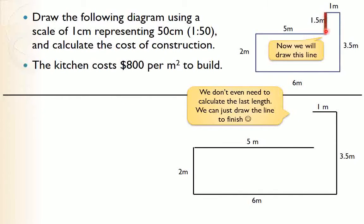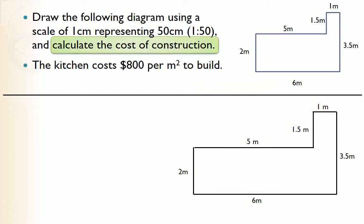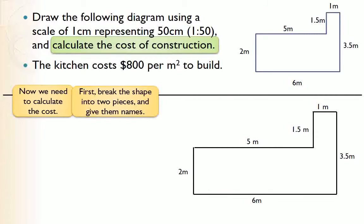For the last side, we don't actually need to calculate because it's just joining the two endpoints — there's only one length that could possibly fit. Finish it off and remember to label it with the real-world measurement. There's one part of the question we haven't done yet: we need to calculate how much it will cost. We're given that it costs $800 per square meter, so we need to find the area first.